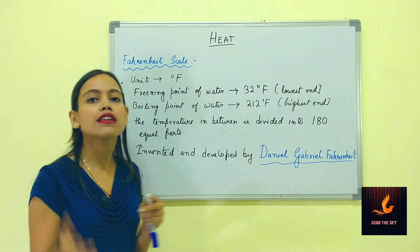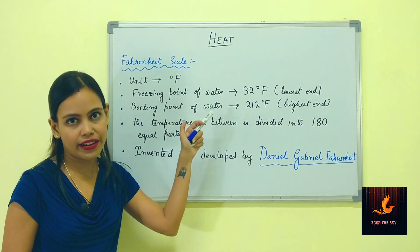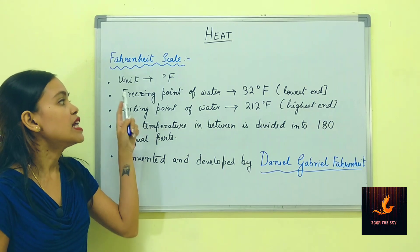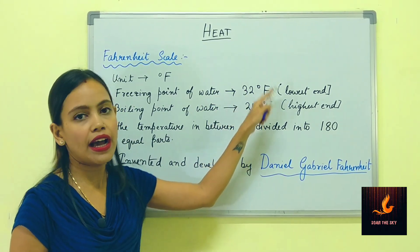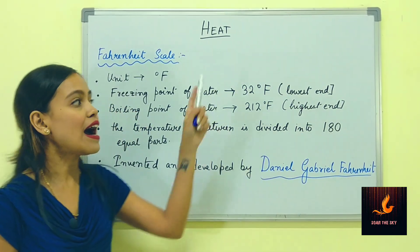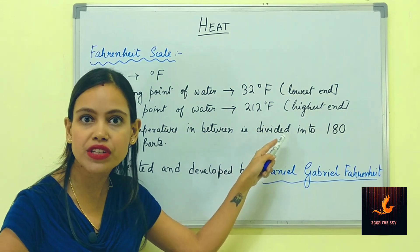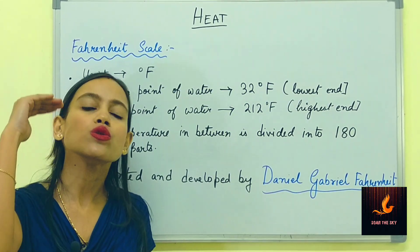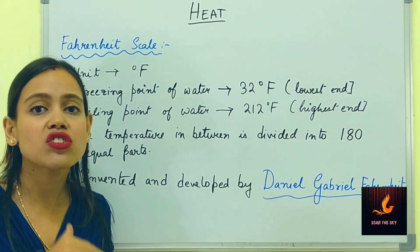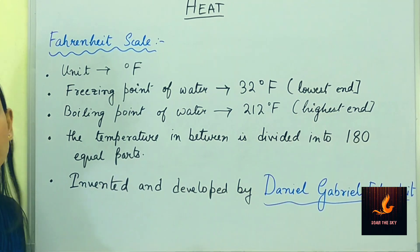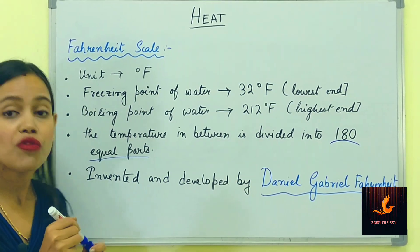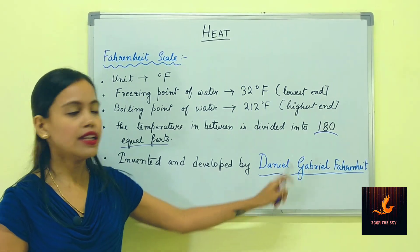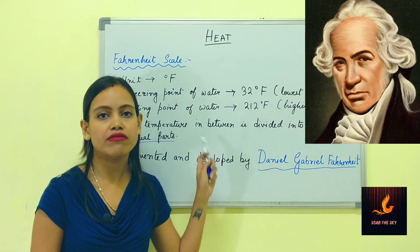The Fahrenheit scale is another scale of thermometer whose unit is degree Fahrenheit. The freezing point of water is 32 degrees Fahrenheit — the lowest end — and the boiling point is 212 degrees Fahrenheit — the highest end. The temperature between these two points is divided into 180 equal parts. This scale was invented and developed by Daniel Gabriel Fahrenheit, from whose name the scale takes its name.